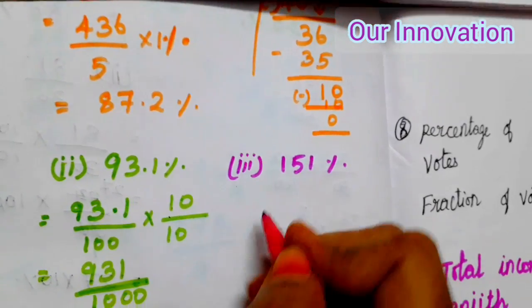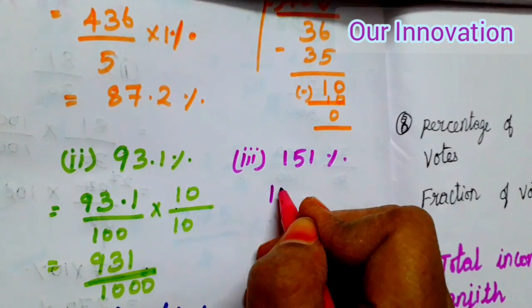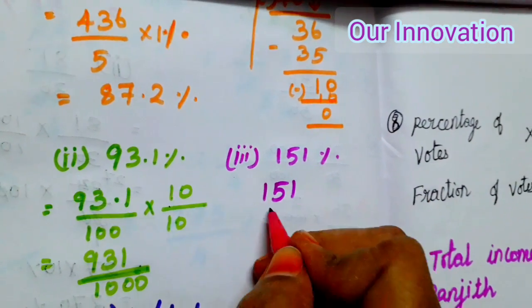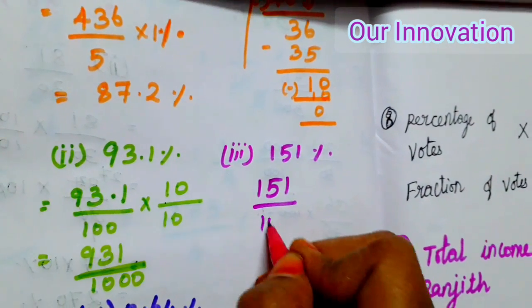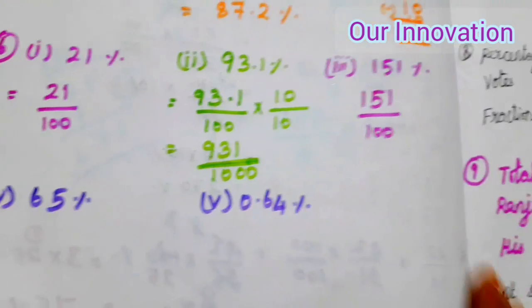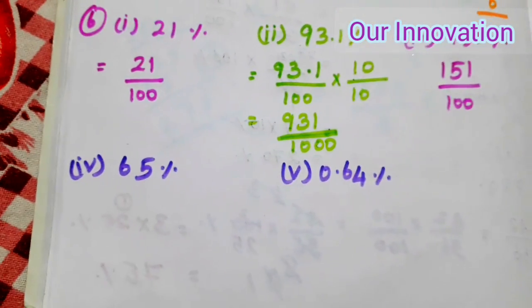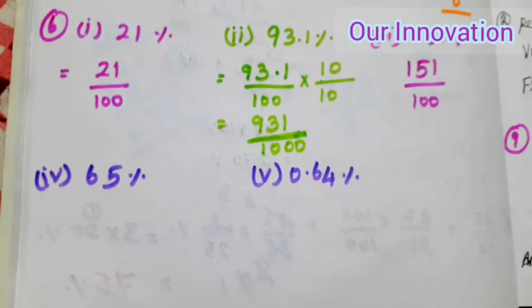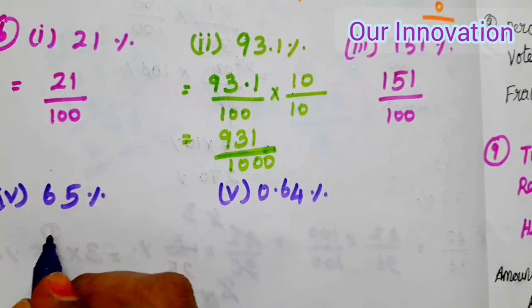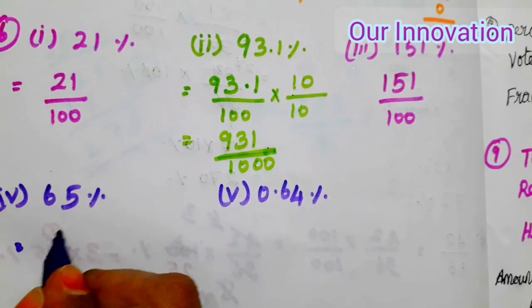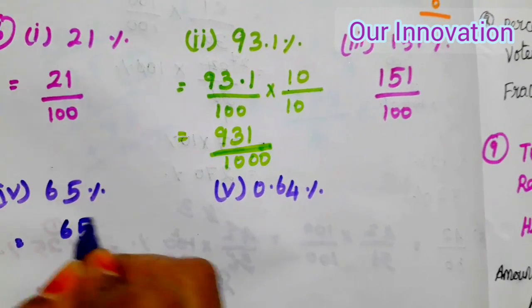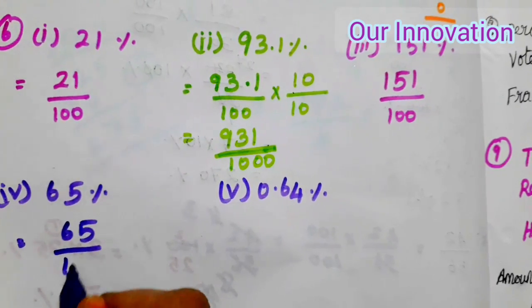Next: 151 percentage equals 151 by 100 — this is the fraction. Next: 65 percentage is equal to 65 by 100.